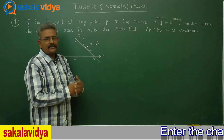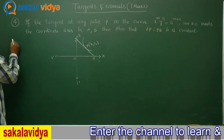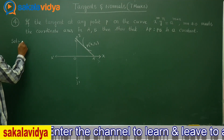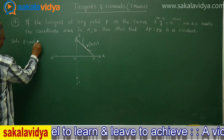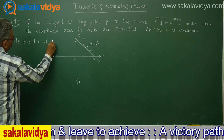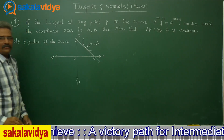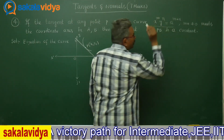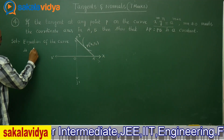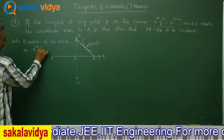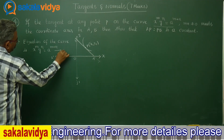Now the solution. The equation of the curve is x^m · y^n = a^(m+n). Call this equation (1).